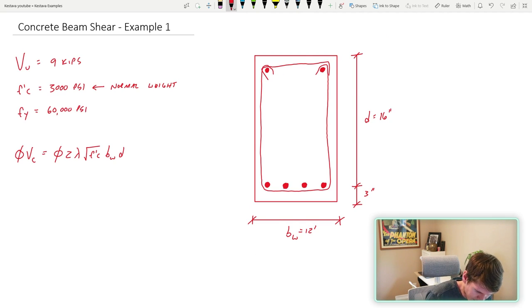Here we are, we have everything besides I would say these two unknowns, your phi and your lambda. Well, phi is equal to 0.75 for shear and lambda is dependent upon the type of concrete that you're using. We have normal weight, which is just regular plain Jane, the normal stuff. So lambda is just 1.0.